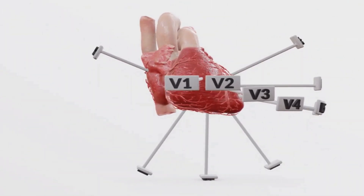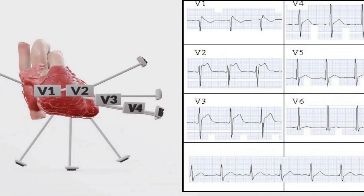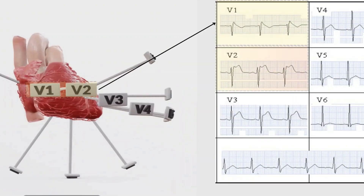First up, V1 and V2. These are placed more in the center of your chest, so they're perfect for seeing the anteroseptal area — that's the part of the anterior wall closest to the septum, the middle wall inside the heart. So when you see V1 and V2, think septal view.